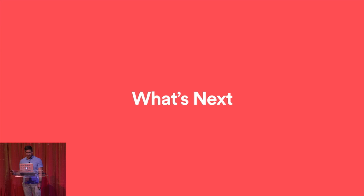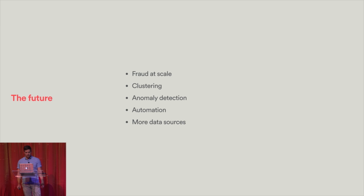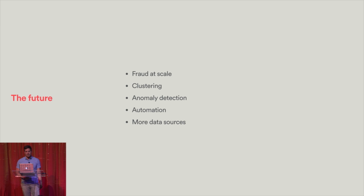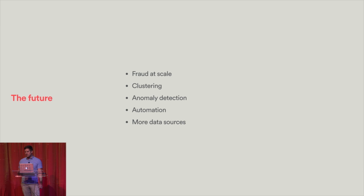So what's next for the trust and safety team? We're going to continue to scale our infrastructure as Airbnb continues to grow. We want to focus on clustering — rather than looking at events in isolation, to look at events in aggregate and look for patterns. Anomaly detection for allowing the system itself to find when something looks a little bit fishy. Automation — there's a lot of human involvement in every step of the process I just described, but a lot of it could be automated; for example, model building is currently done by a human but there's no need for that. And then gathering more data sources — feature engineering is the primary way we're going to make gains in fighting fraudulent activity, so how can we get more data to be more confident in the decisions we're making?